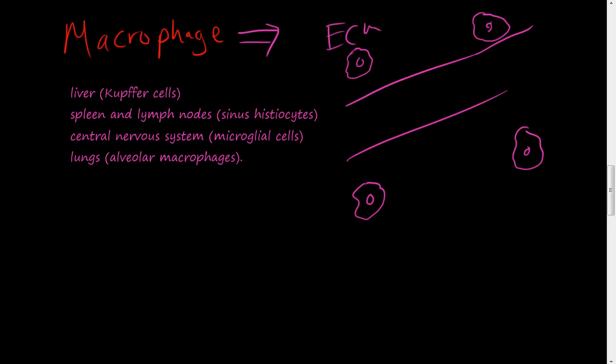They're all over the body, and in the liver they're called Kupffer cells. These are the same macrophage - depending on where they're at in the body, they're called different things. They come from monocytes inside the blood, but when they're in different areas of the body, they differentiate and are called different things. In the liver, they're called Kupffer cells. In the spleen and lymph nodes, they're called sinus histiocytes. In the central nervous system, they're called microglial cells. In the lungs, they're called alveolar macrophages. They're the cell of chronic inflammation.